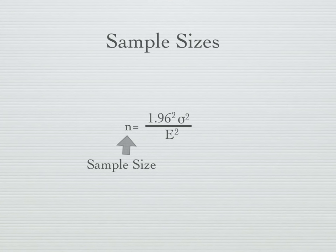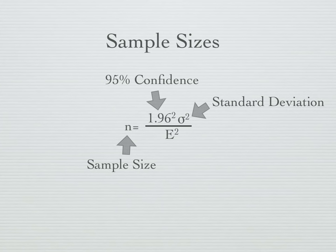1.96 squared, which is a 95% confidence, times the standard deviation squared, which is sigma squared, times the error rate squared, which is represented by capital E.